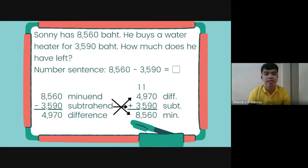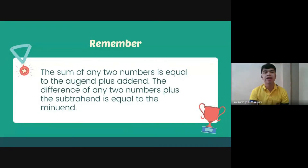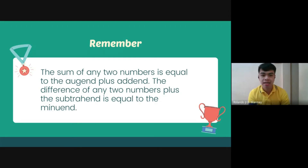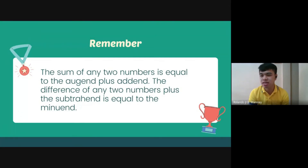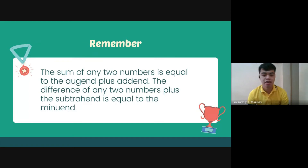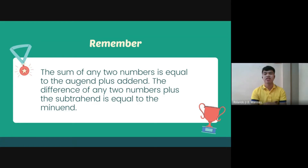Can you follow so far? The sum of any two numbers equals the augend plus addend. The difference of any two numbers plus the subtrahend equals the minuend. We can use this principle to check if our answer in addition or subtraction is correct. That is the relationship between addition and subtraction.